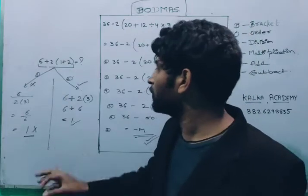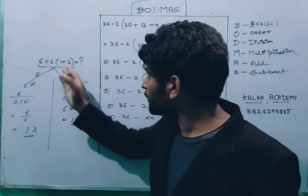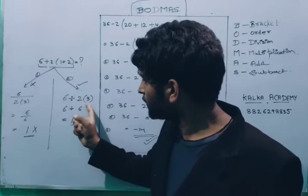So first we will solve the brackets. We will solve the brackets. 1 plus 2 is equal to 3, and 2, 3 is equal to 1.